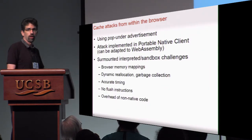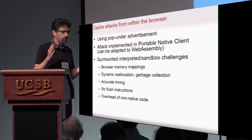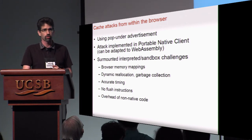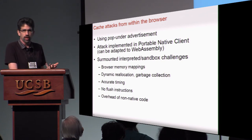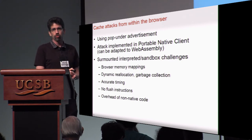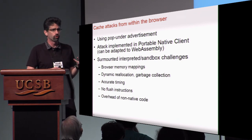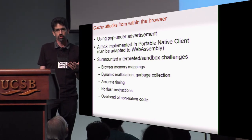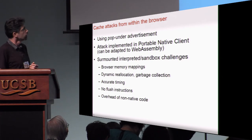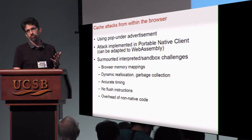We have this very convenient deployment vector of a malicious website, a pop-under advertisement, or any other way to run code in the user's browser. It doesn't exploit any vulnerability or any bug — everything is still subject to confinement — but the cache attacks still work. We implement these attacks using portable native code supported by Chrome, which you can think of as a particularly efficient version of JavaScript. It is being standardized into a replacement called asm.js or WebAssembly that has essentially the same properties.